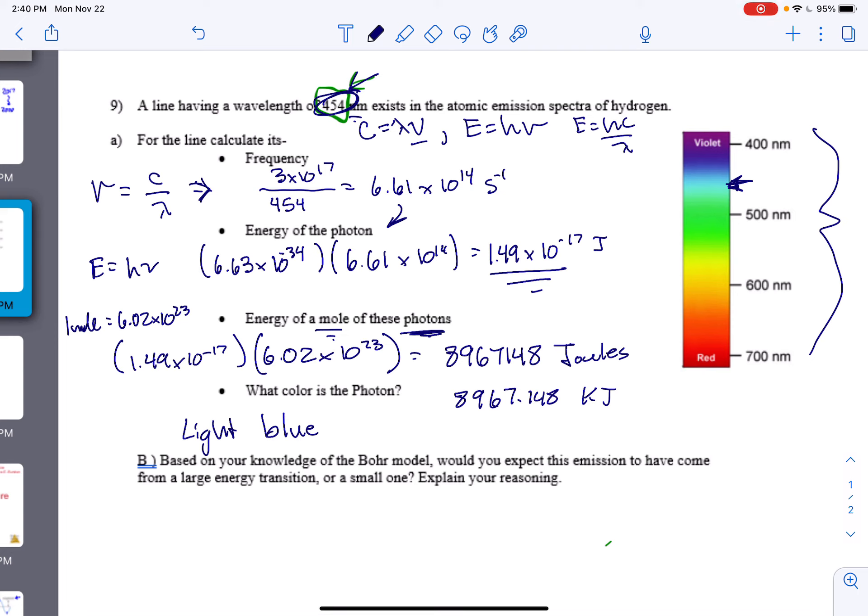And then letter B. Based on your knowledge of the Bohr model, would you expect this to have come from a large or small? We haven't learned it yet, but 400 nanometers means high energy. High energy comes from a large fall. Okay, hopefully that helped. All right, let's go.